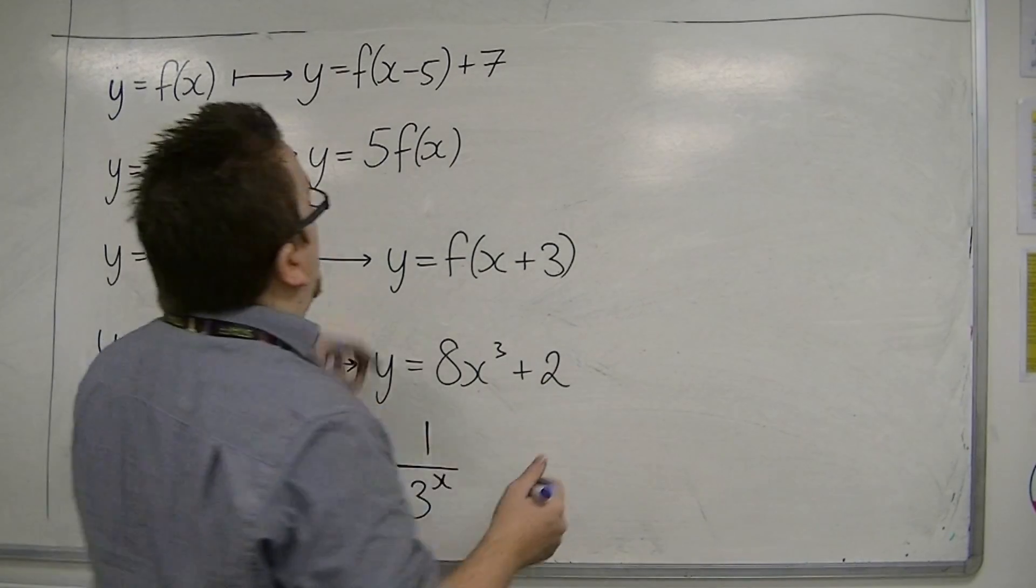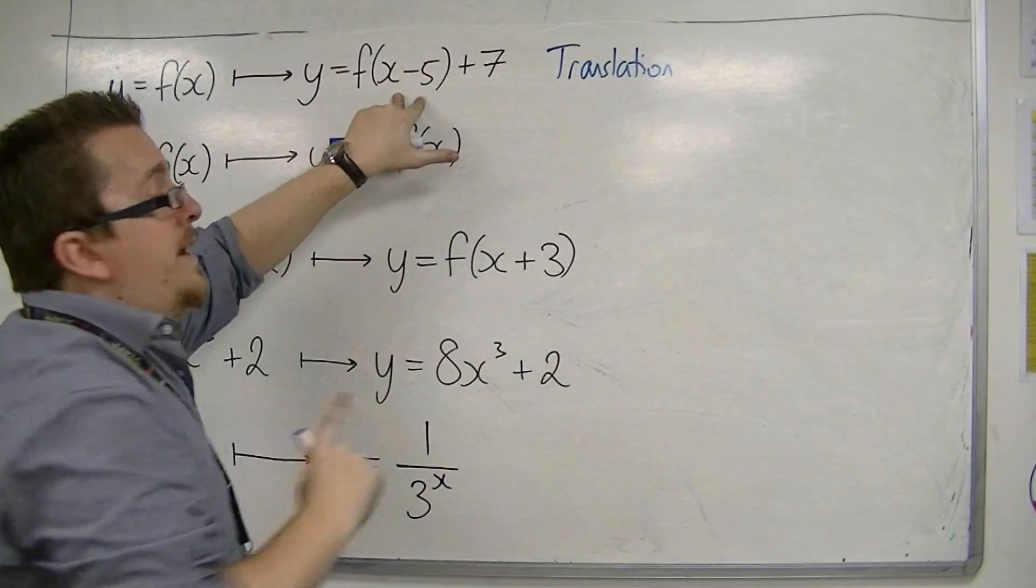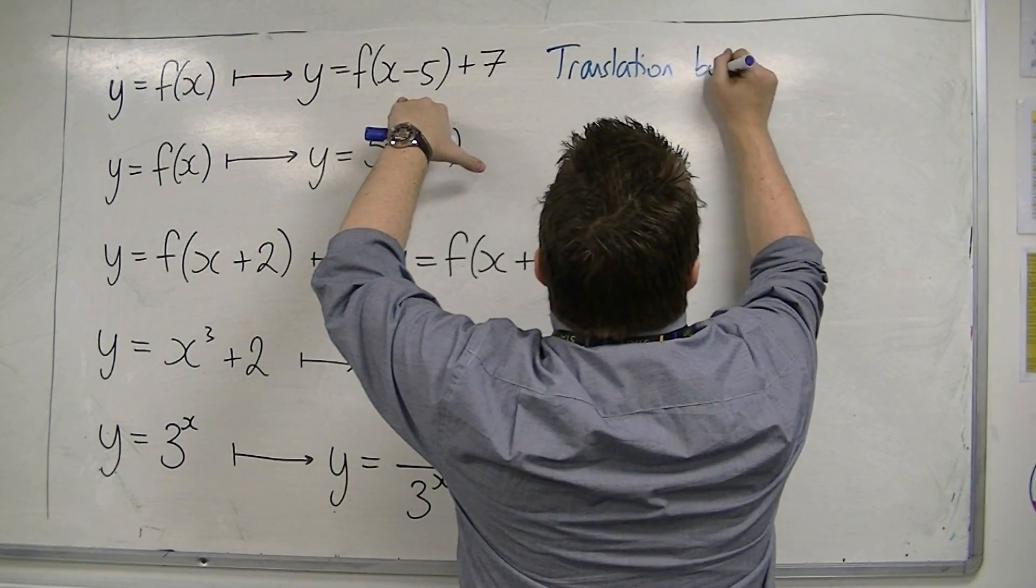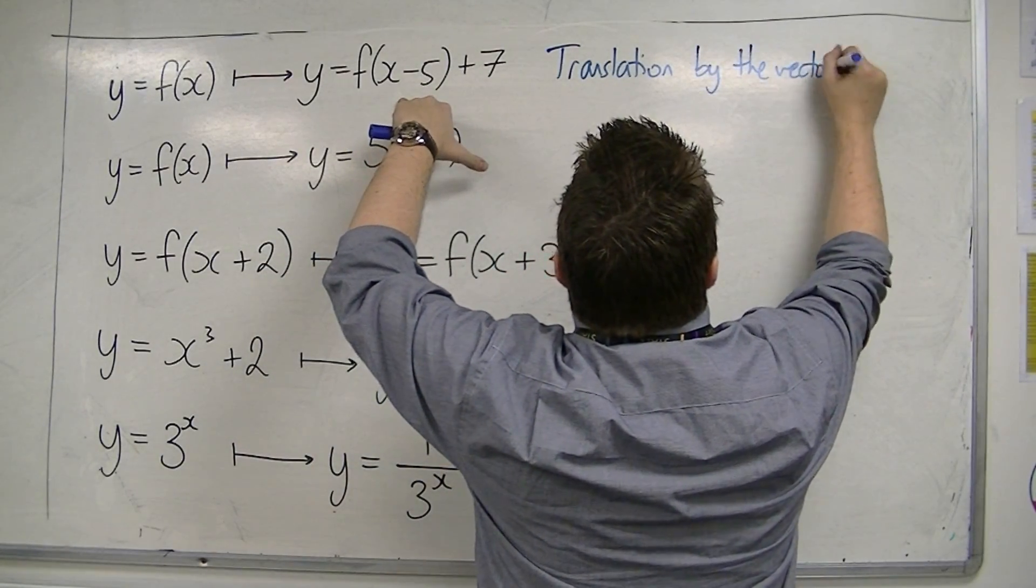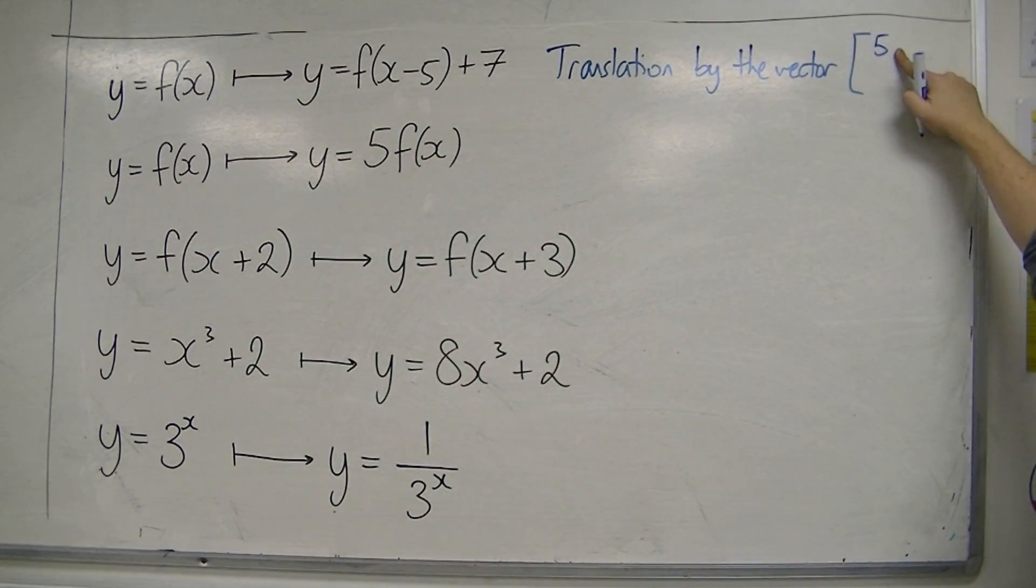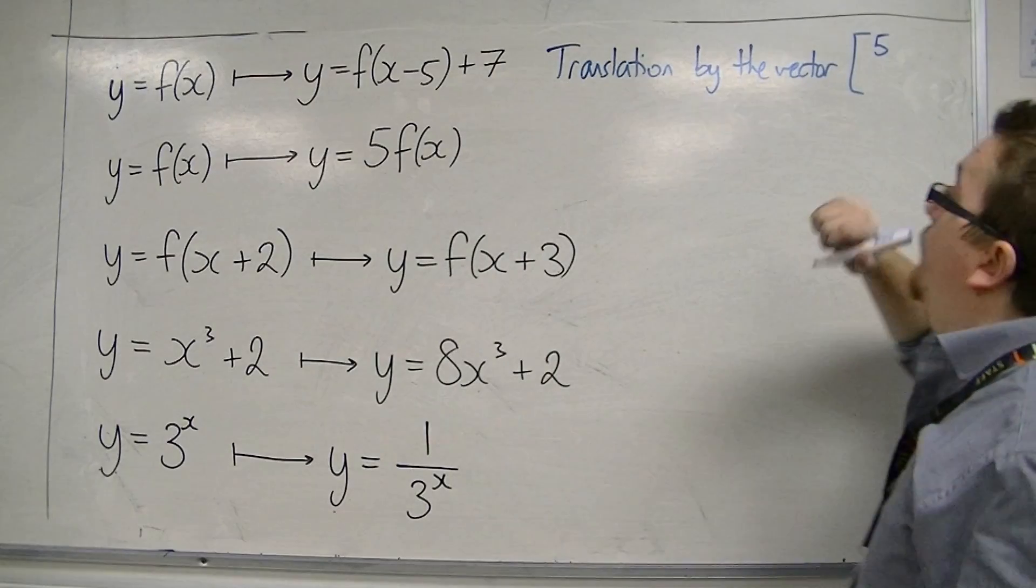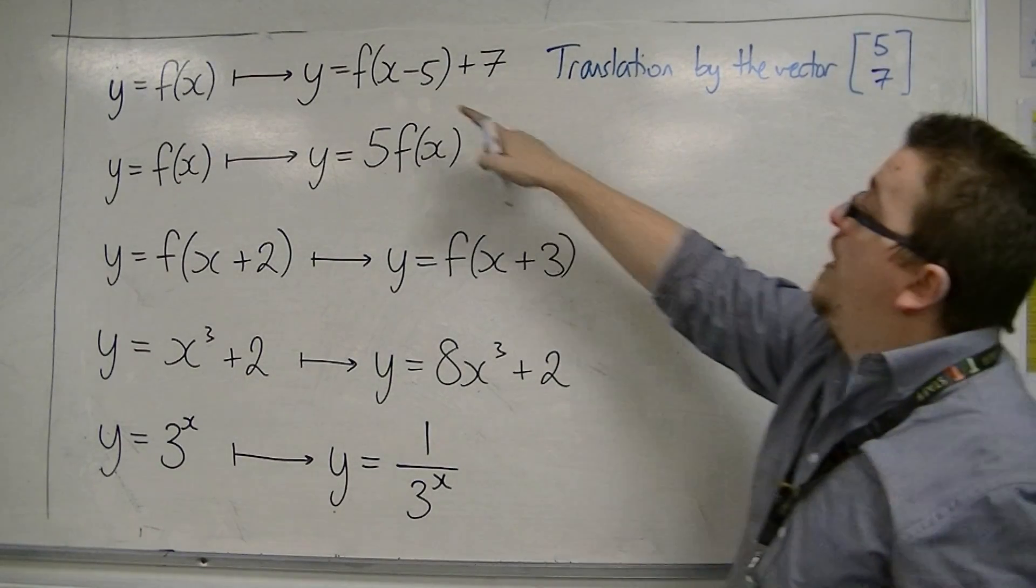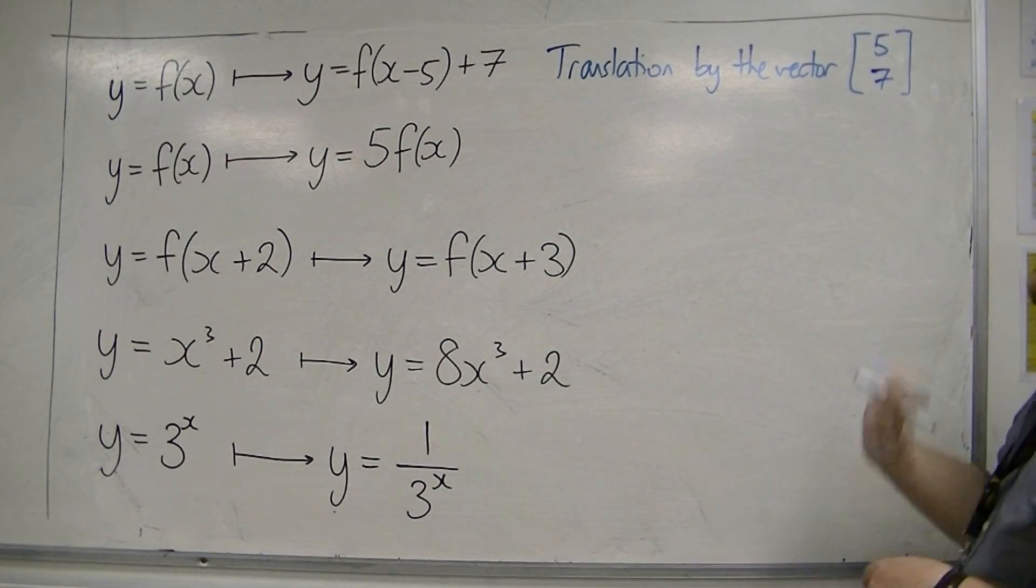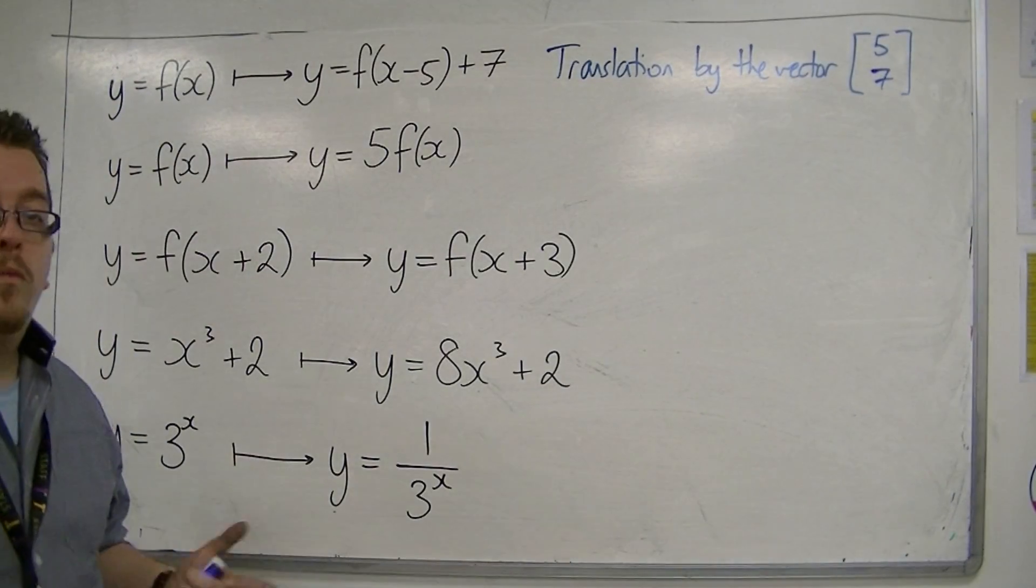Because I know that if the number inside the bracket is minus 5, then that must mean that it is a positive 5 when I go to write the vector. So the x-direction component is 5, while the component for the y-direction is 7. The number inside changes, so it reverses the sign, and the number outside the bracket stays the same, much like it would be with completing the square.